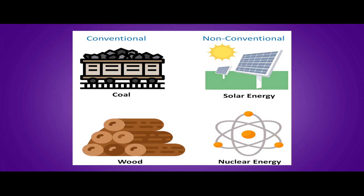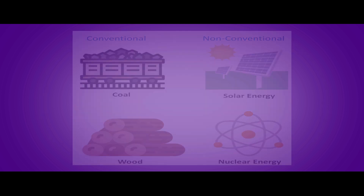Looking at examples by comparing photos: conventional energy resources include coal and fuel wood, while non-conventional energy resources include solar energy.